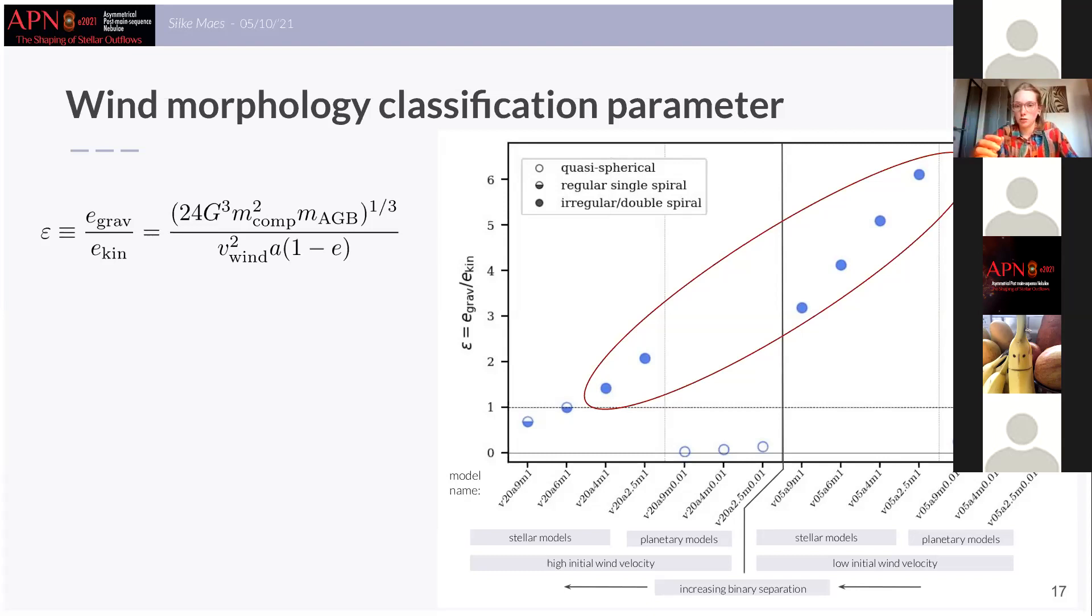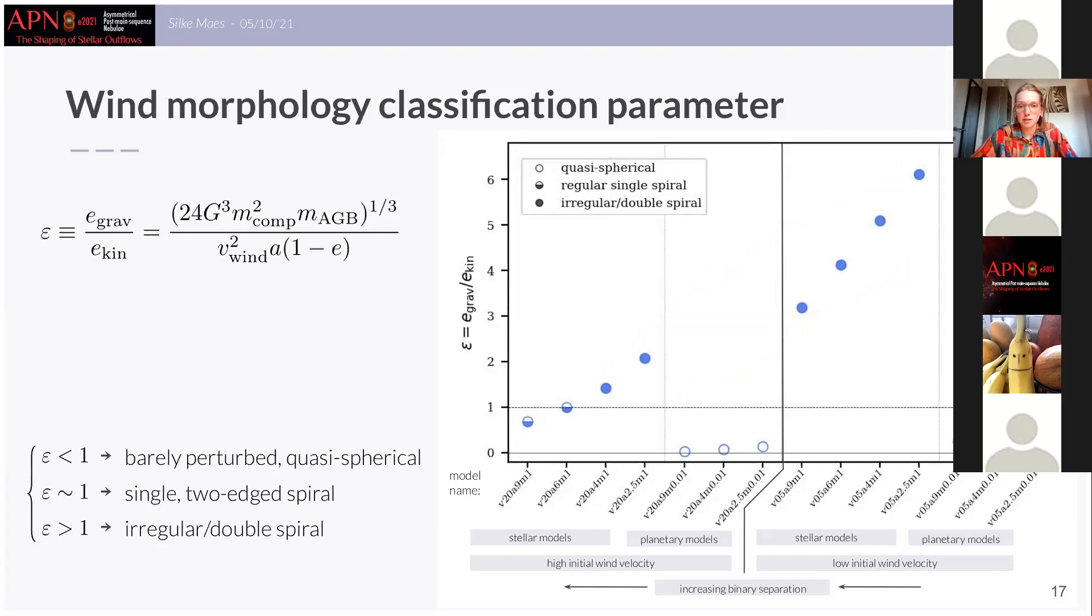So this means that you can actually find the following classification scheme that I show here on the slide and by this we confirm that this epsilon parameter is able to divide our models in the same classes as what we have found in the morphology and therefore epsilon is a suited classification parameter.